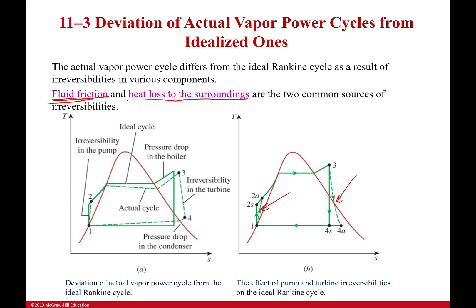The pump irreversibility is really negligible — we typically don't talk about it because the difference is absolutely minuscule in the grand scheme of things. The turbine, however, is not so negligible. When solving problems, the turbine is much more important, and when we eventually introduce a real compressor, it really matters.